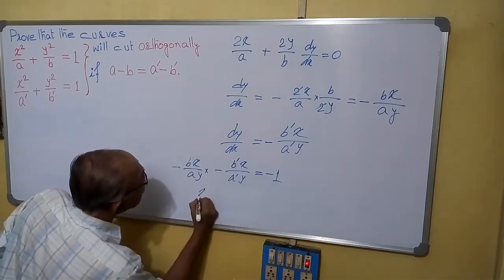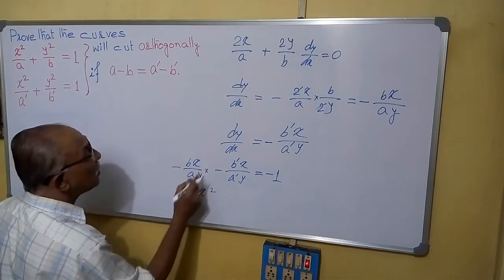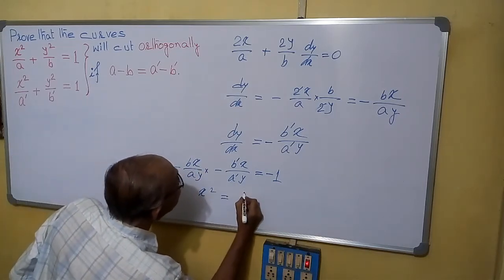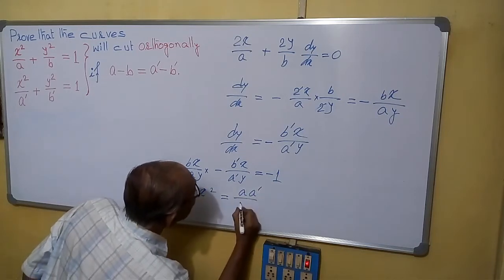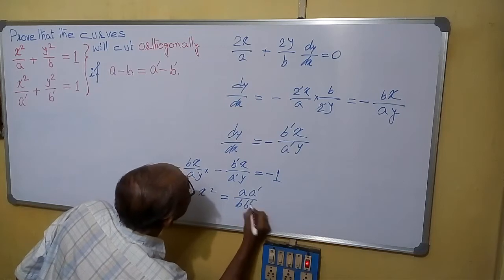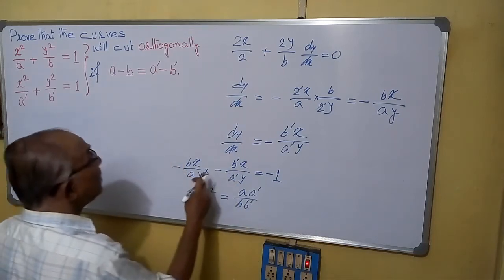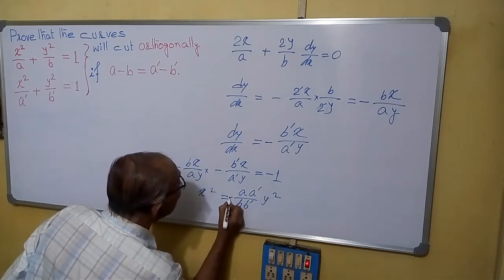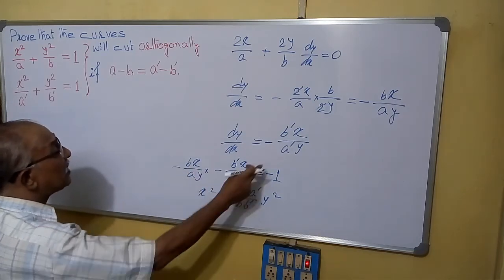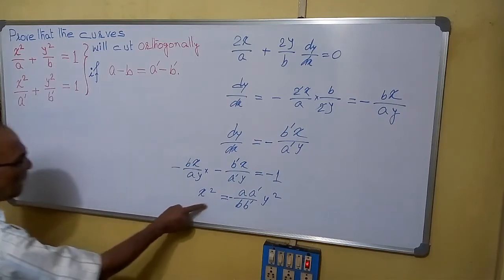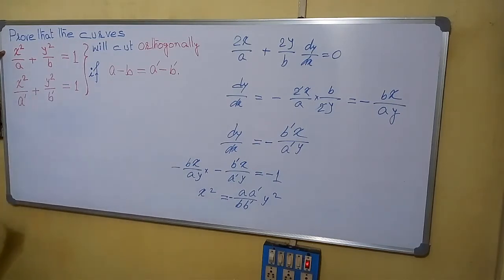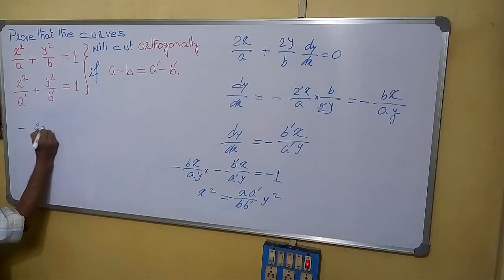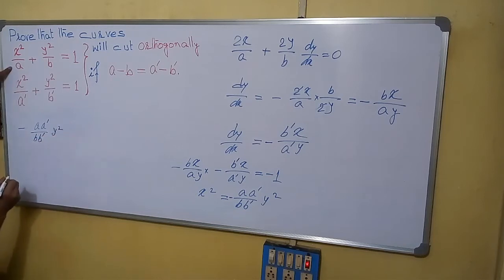From here we can write: x squared — this minus minus will make it plus — equals to minus A A dash by B B dash times y squared. Now if we put this value of x squared in the first equation, what we get is: minus A A dash by B B dash times y squared by A plus y squared by B equals to 1.